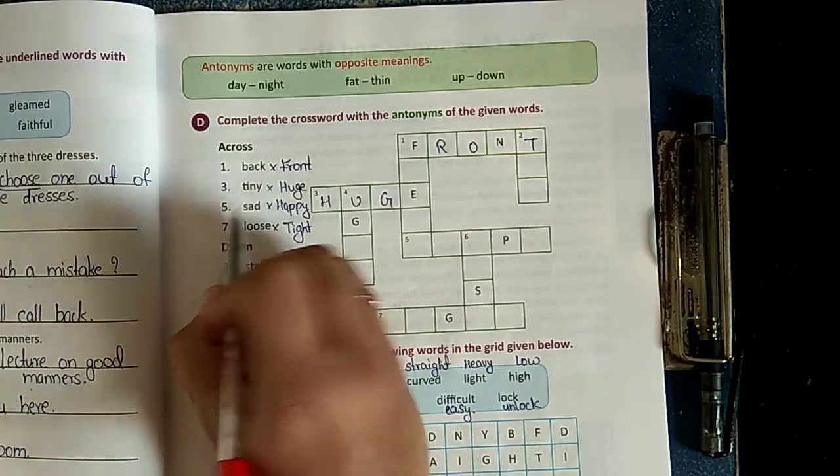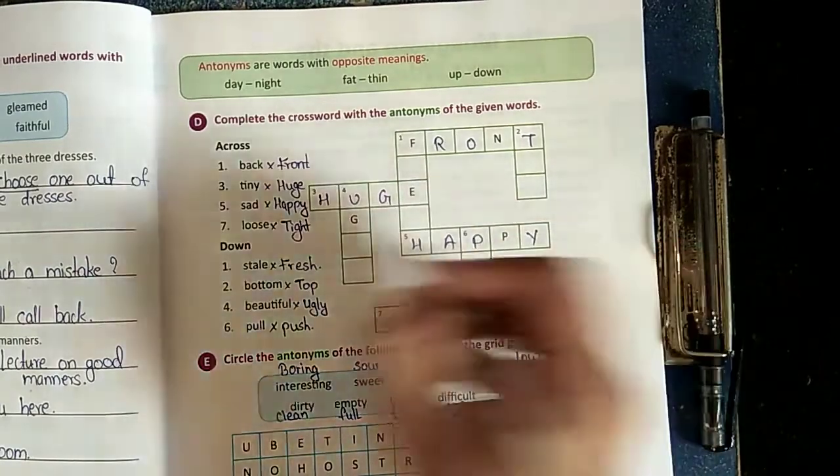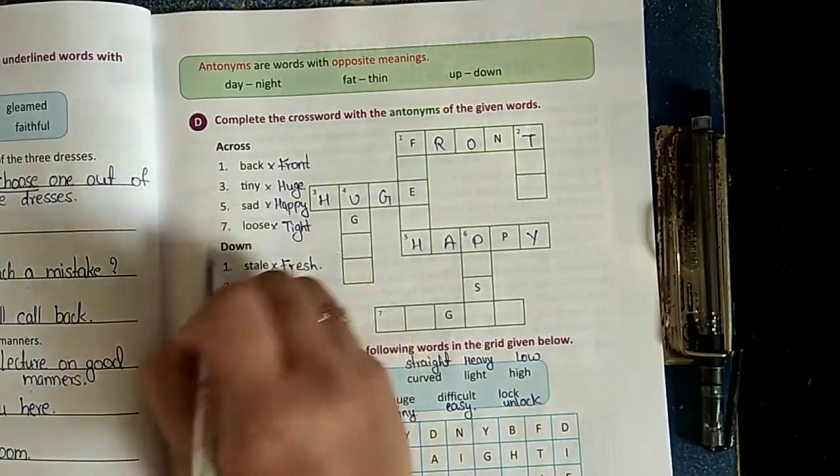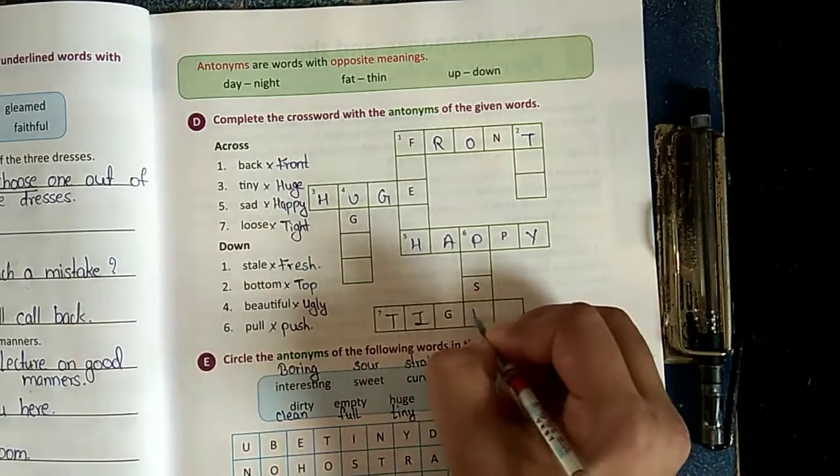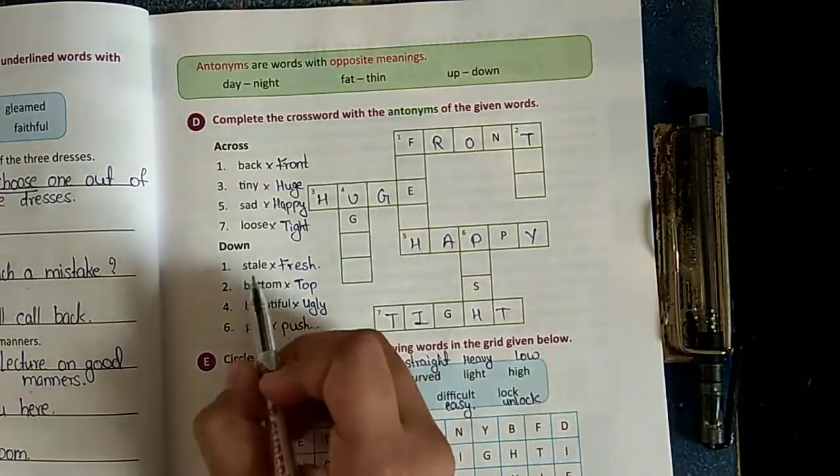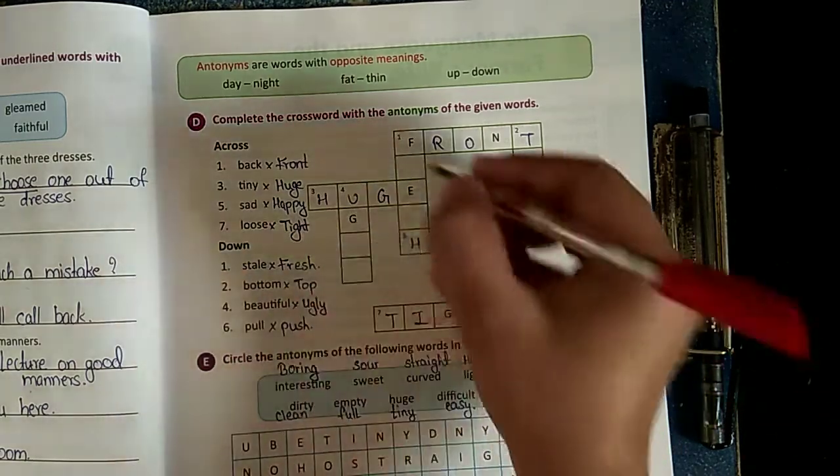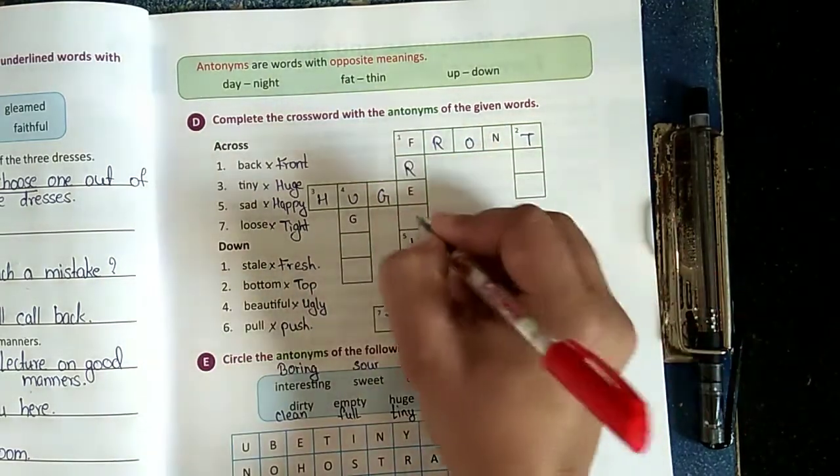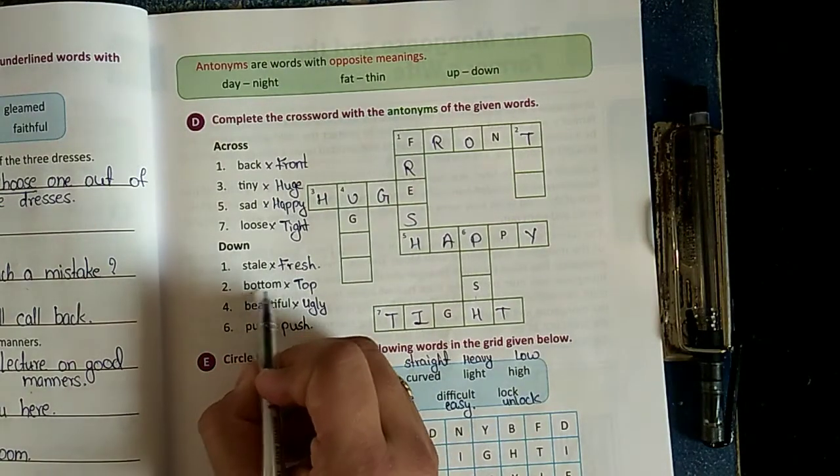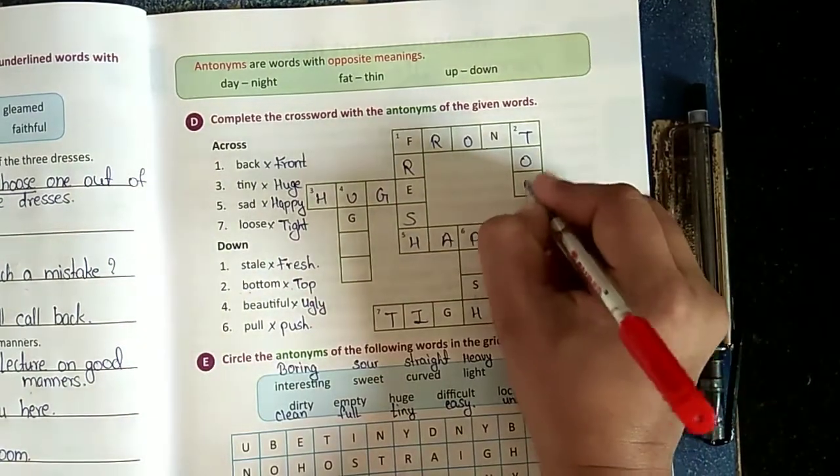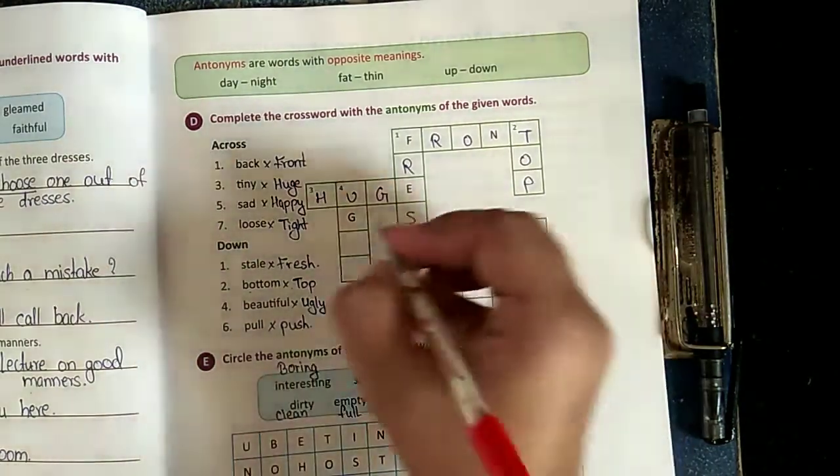Sad - sad will become happy. Loose - what is the opposite of loose? It is tight: T-I-G-H-T. Stale - what is the opposite of stale? It is fresh: F-R-E-S-H. Opposite of bottom - it is top. Opposite of beautiful - ugly: U-G-L-Y.